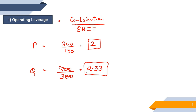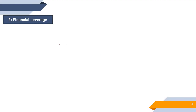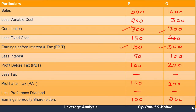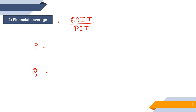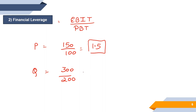Now the second leverage: Financial Leverage. Formula is EBIT divided by PBT — Earnings Before Interest and Tax divided by Profit Before Tax. For P: 150 divided by 100 = 1.5. For Q: 300 divided by 200 = 1.5. So Financial Leverage is 1.5 for both P and Q. That is your second type of leverage.